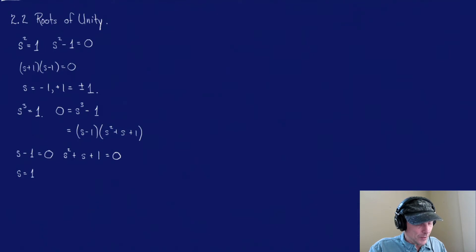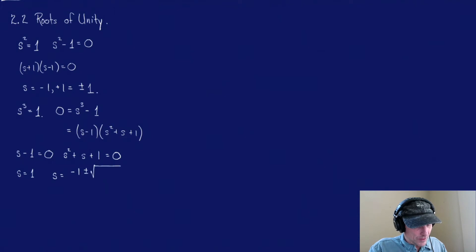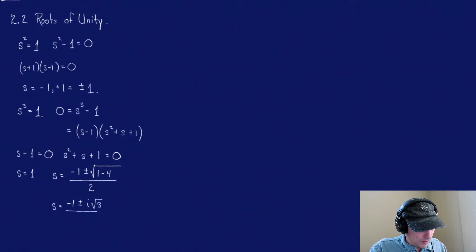The next solutions come from the quadratic formula. If I could factor this for you, I would, but I can't. So s is equal to minus 1 plus or minus the square root of 1 squared minus 4 times 1 times 1, all over 2 times 1. We can simplify this to say that s is minus 1 plus or minus i square root of 3, all of that over 2. That's two more solutions.